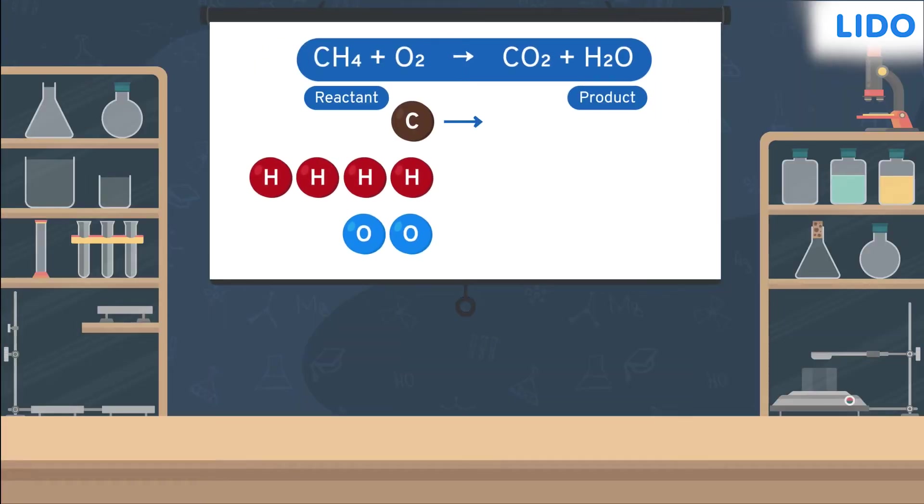Here's the chemical equation for this reaction. As you can see, the number of hydrogen atoms on the reactant side is less than the number of hydrogen atoms on the product side, which according to the law of conservation of mass is not possible.